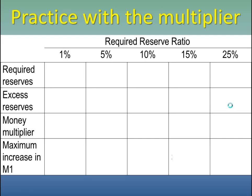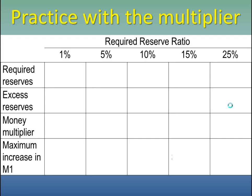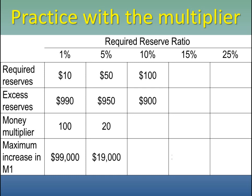For example, with a $1,000 deposit and a 1% reserve ratio, the money multiplier is 1 divided by 1%, which equals 100. That $1,000 deposit creates an additional $99,000 in M1 — the $990 in loanable funds times the 100 multiplier. With a 10% reserve ratio, the money multiplier is 1 over 10%, which equals 10. The $900 lent out times the 10 multiplier means that $1,000 deposit creates an additional $9,000 in M1.